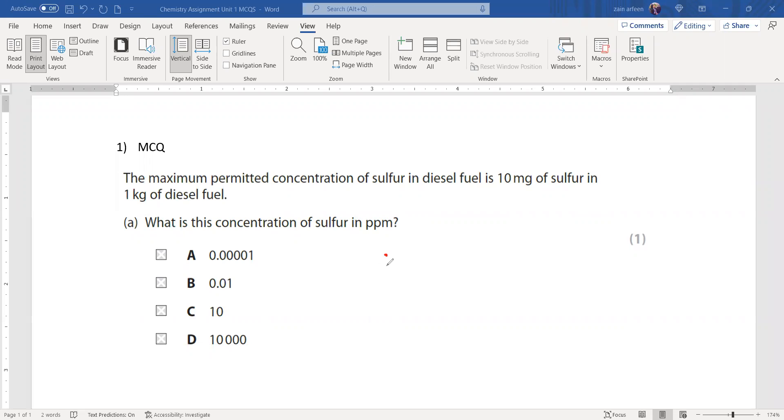So the formula for concentration in parts per million equals mass of solute divided by the mass of the solvent into 1 million.